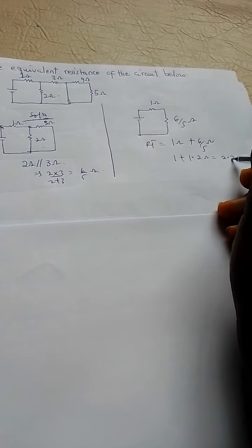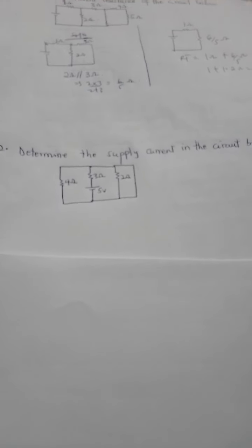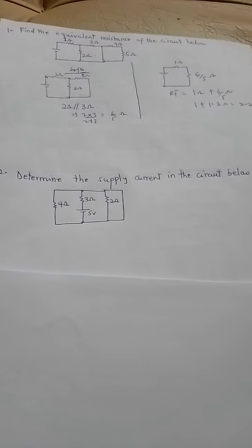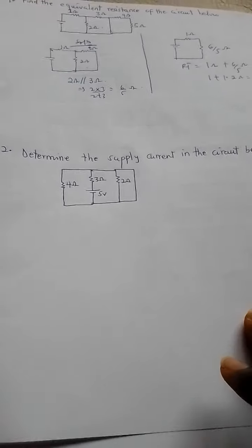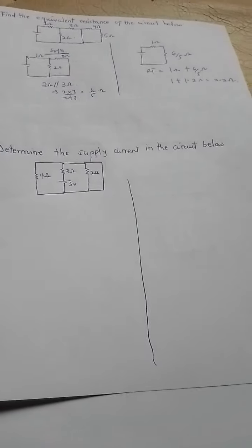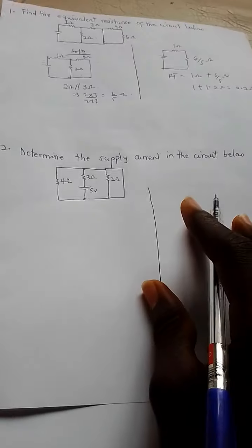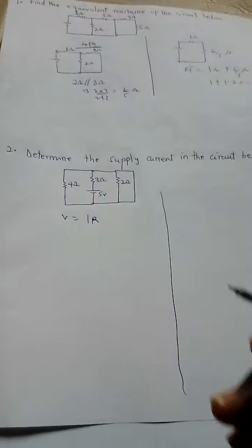Now let's see the second example. For the second example, it's saying that determine the supply current in the circuit below. So there is a circuit and we should determine the supply current of this circuit. To find current, you know from Ohm's law that voltage is equal to current times resistance.